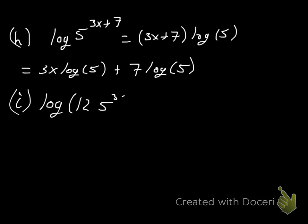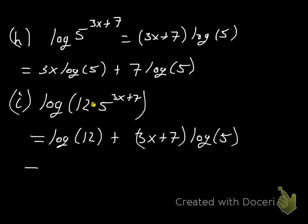And I think we have one more. Log of 12 times 5 to the 3x plus 7. And then we have a multiplication there. And we can break that up into 2. It's going to be log of 12 plus log of 5 to the 3x plus 7. And what I did there is I skipped a step here. I realized I was going to have log of 5 to the 3x plus 7. And so to save myself some time, I went ahead and used the power rule to bring that down. So that's where that came from. Log 12, and then we'll go ahead and distribute 3x log 5 plus 7 log 5. And that's probably about as far as I can take it.